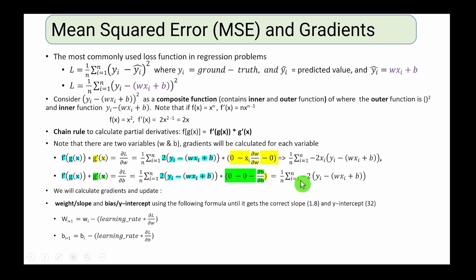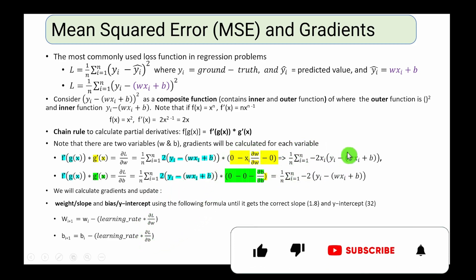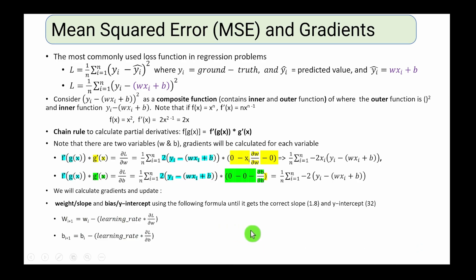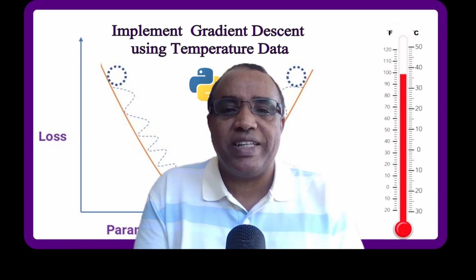Through an iterative process, the gradient descent algorithm keeps calculating gradients and updates the parameters using: parameter minus learning rate times the gradient. It repeats until it achieves minimum loss. In the case of degree Celsius and degree Fahrenheit, minimum loss is achieved when the slope is 1.8 and the y-intercept is 32. In the second part, I will show you the implementation of the gradient descent algorithm.